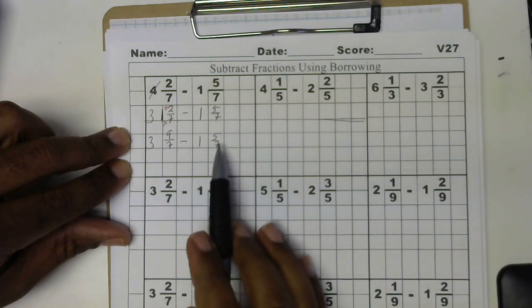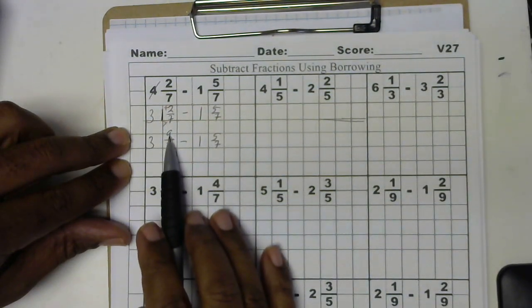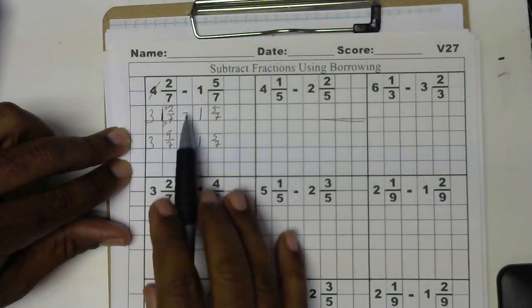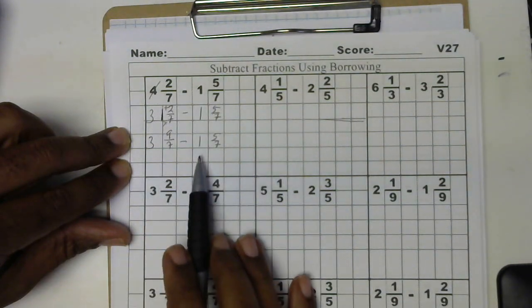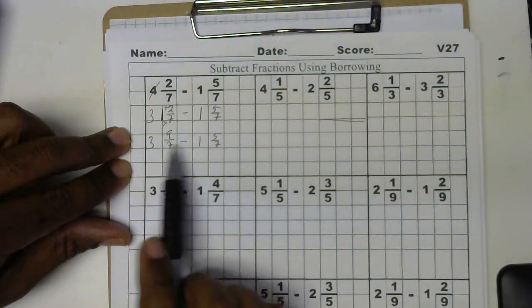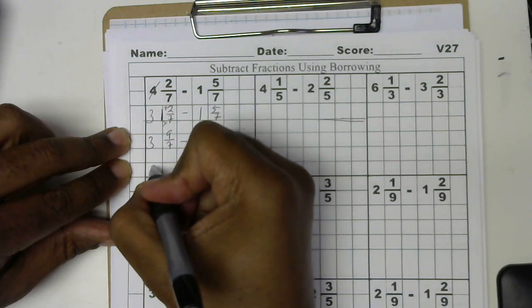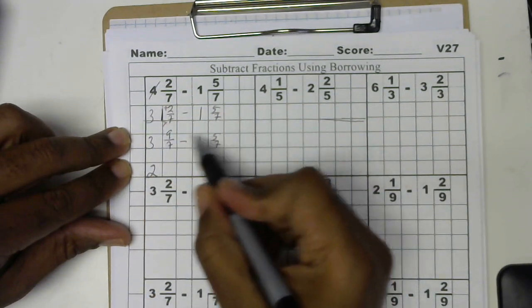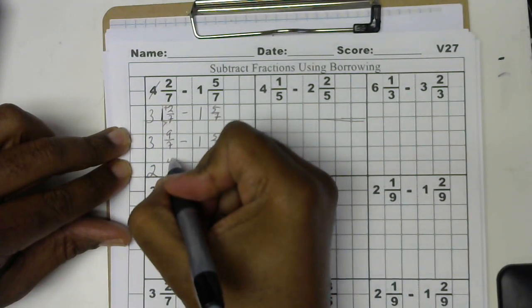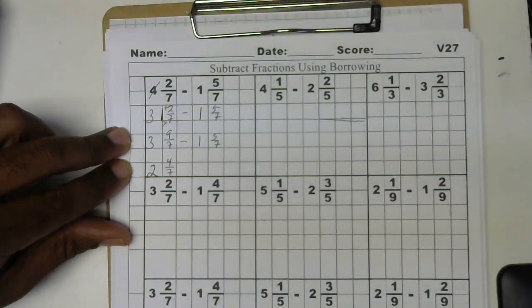So now when I subtract 5 from 9 it will work. Just want to point that out. 5 from 2 wouldn't work. Alright, let's finish. 1 from 3 leaves 2 and 5 from 9 leaves 4 all over the common denominator of 7.